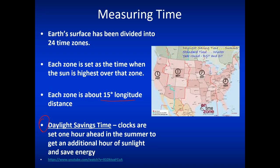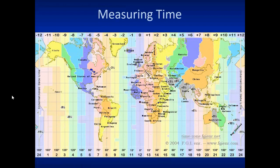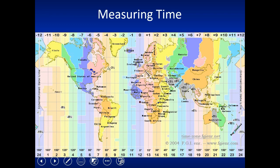Right now we have daylight saving time, but they're talking about doing away with it since it's not as necessary as it used to be. There's actually a statistic that more heart attacks occur when the clocks spring ahead — when people lose an hour of sleep, there are more heart attacks than any other time of year, because people get less sleep. Going eastward through time zones, you go an hour ahead; going westward, you go an hour behind. They had to add the international dateline so that when you pass over it you add or subtract a day — otherwise you'd just keep going back in time.